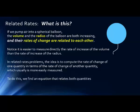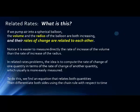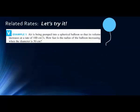To do this, we need to find an equation that relates both quantities, and then we differentiate both sides using the chain rule with respect to time. This is the same concept we use for implicit differentiation when we don't have an explicit equation.